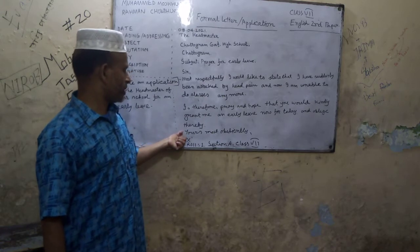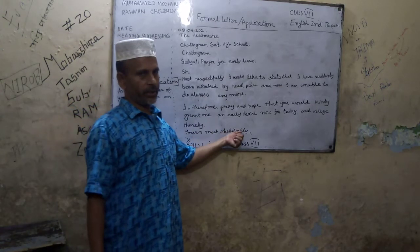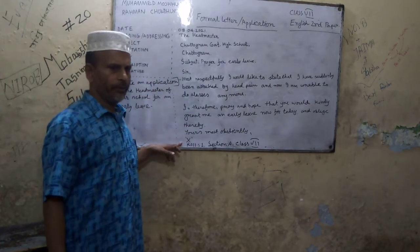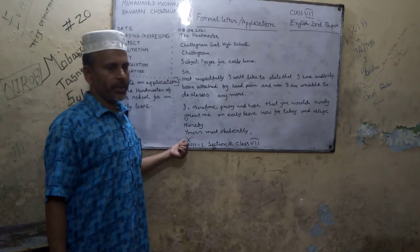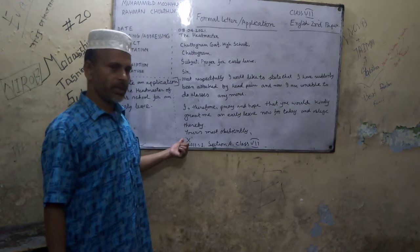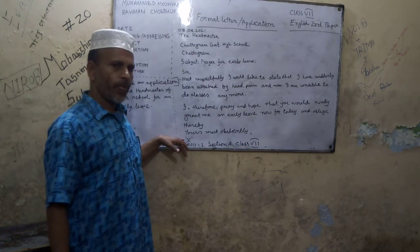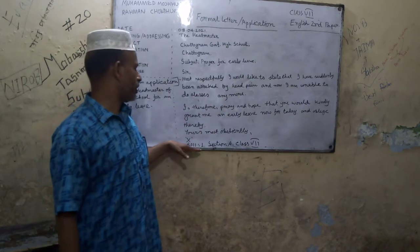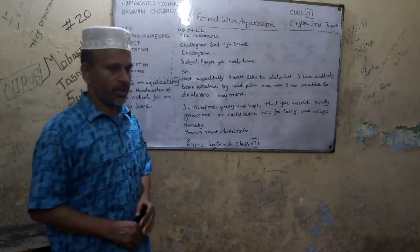That is the body of the application. Then comes the subscription. Most respectfully, it is your name — represented here as X. For this X, you can write your own name. This X represents the name of the writer. Then it is Roll Number 1, Section A, Class 7.